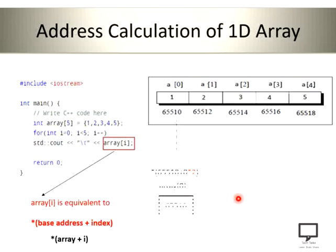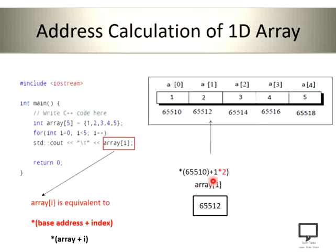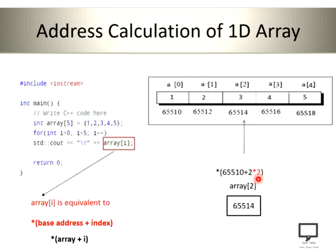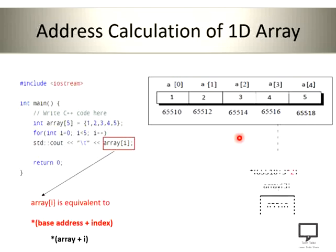For the second element, 2 × 2 = 4, so the address is 65510 + 4 = 65514, and the value present at that address is the element array[2]. In this way, elements are accessible by calculating the address locations of the 1D array.